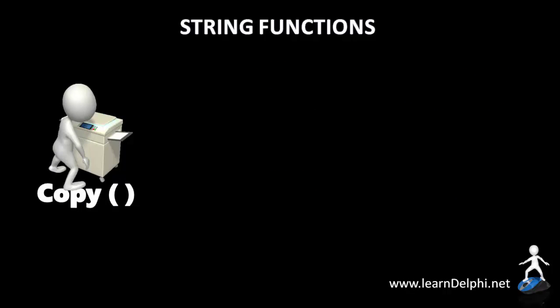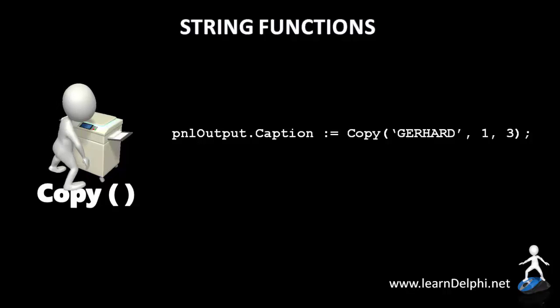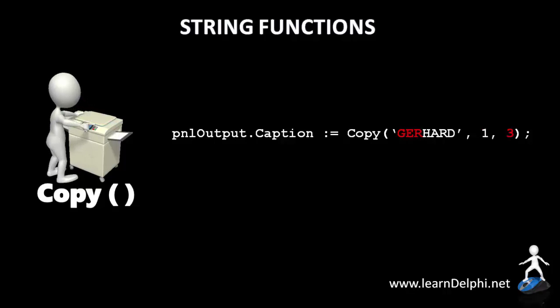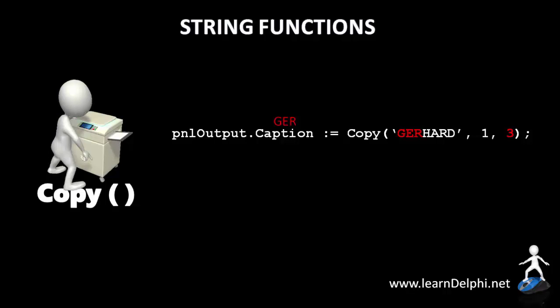And here is one of my favorites — the COPY function. The COPY function copies one or more characters from an input string and only returns those copied characters. The COPY function has three input parameters: the first is the input string from which you want to copy; the second is the position or character number where copying must start; and the third tells the COPY function how many characters must be copied from the starting point. This statement takes my surname as the input string, starts copying at the first character — which is G — and copies three characters in total, including the G. In this case, GER will be copied and assigned to the caption of the panel.